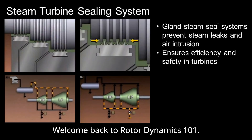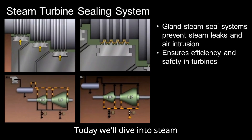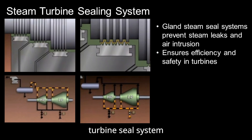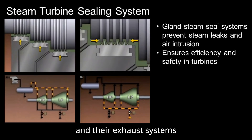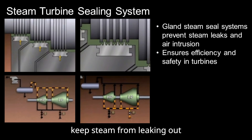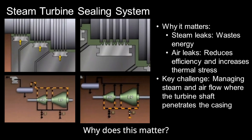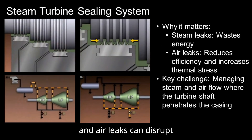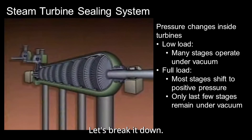Hello everyone, welcome back to Rotor Dynamics 101. Today we'll dive into steam turbine seal systems, especially how gland seal systems and their exhaust systems keep steam from leaking out and air from leaking in right where the turbine shaft passes through its casing. Steam leaks waste energy, and air leaks can disrupt turbine efficiency. Let's break it down.